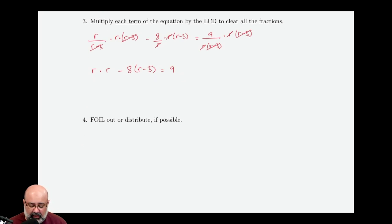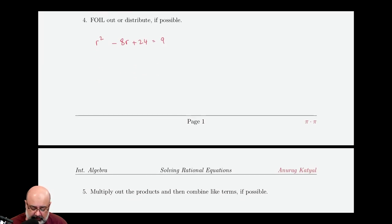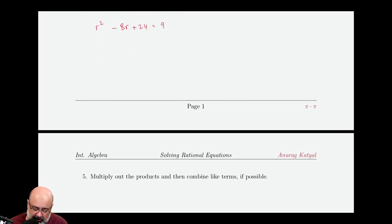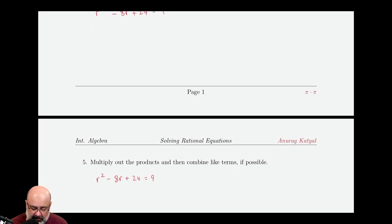Now we need to foil out or distribute if possible. So there's nothing really to foil, but we can multiply r and r to get r squared. Then we can distribute the negative eight, which would give us negative eight r plus 24 equals nine. Now we have to multiply out the products and combine like terms, if any. But there's not really anything to multiply out. So r squared minus eight r plus 24 equals nine just stays there. There's nothing we can do.